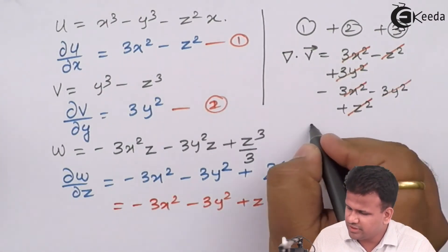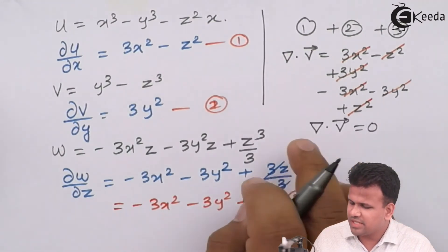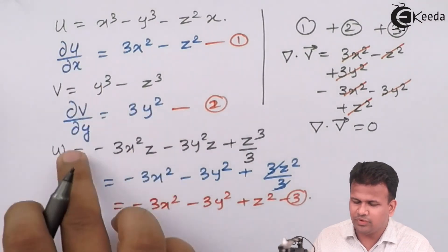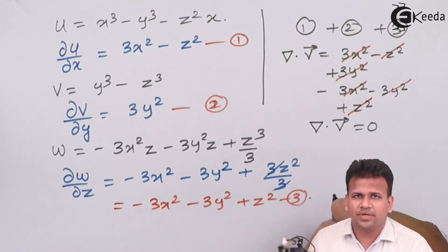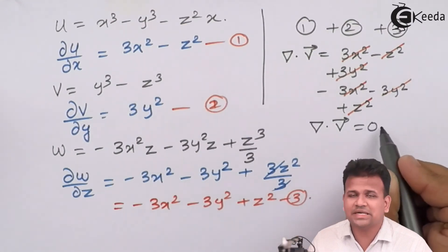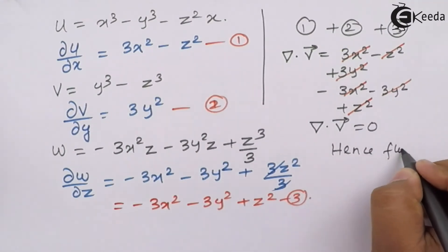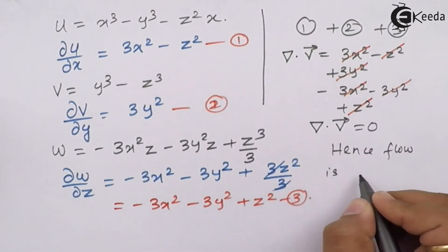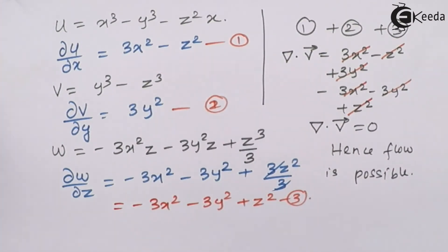Since ∇·V = 0, which is our continuity equation, and it equals 0, the flow is possible. I hope you have understood how to apply the continuity equation and check whether flow is possible or not. Thank you.